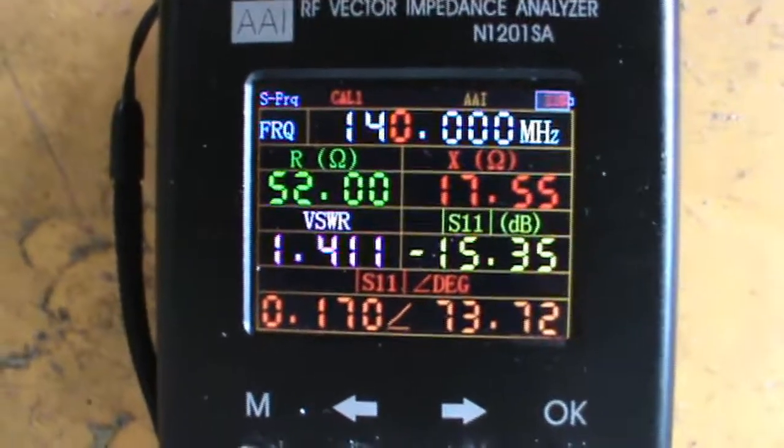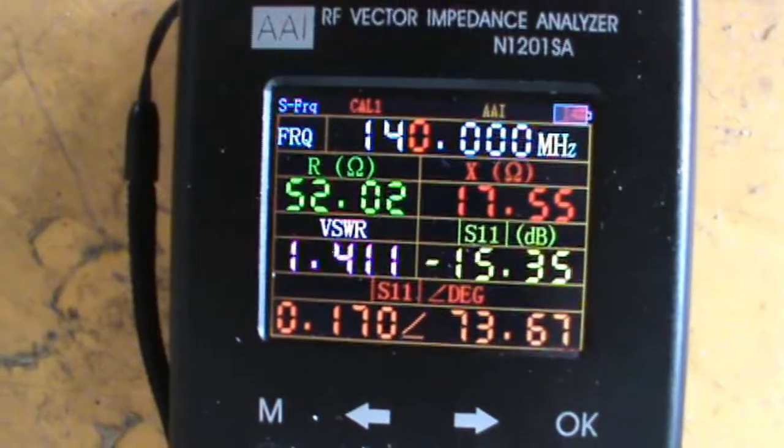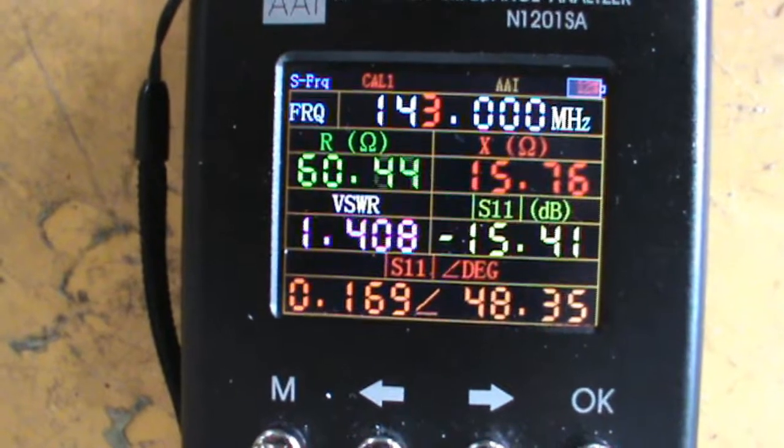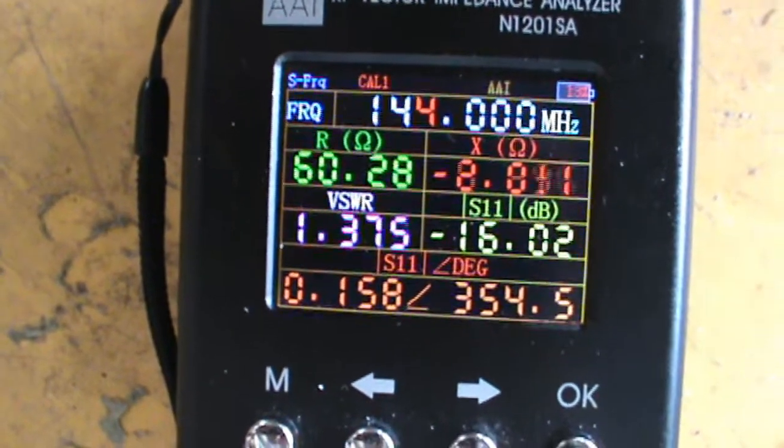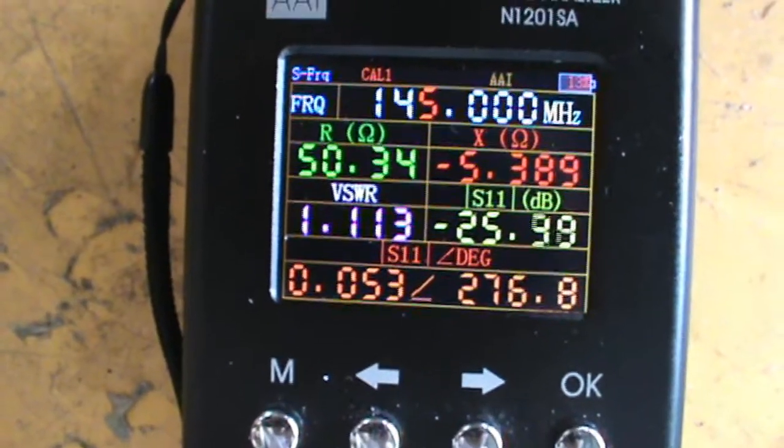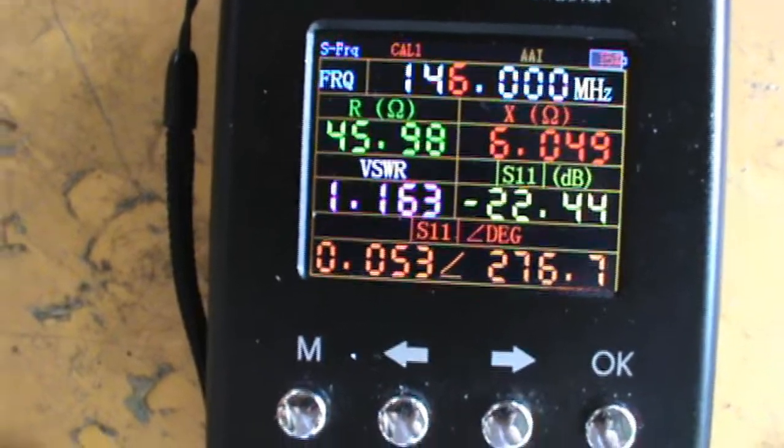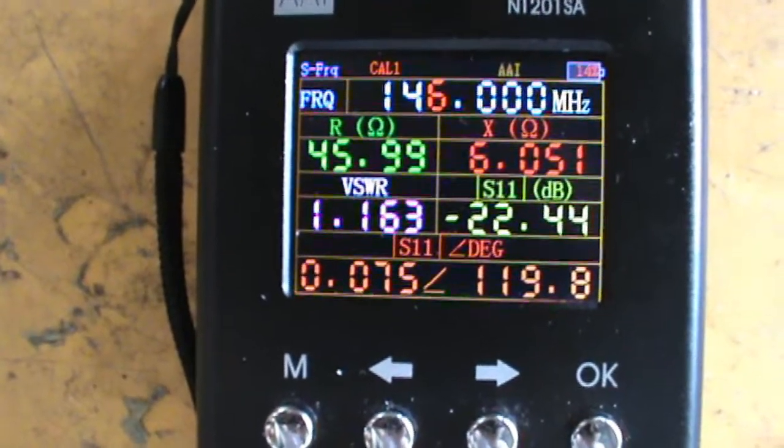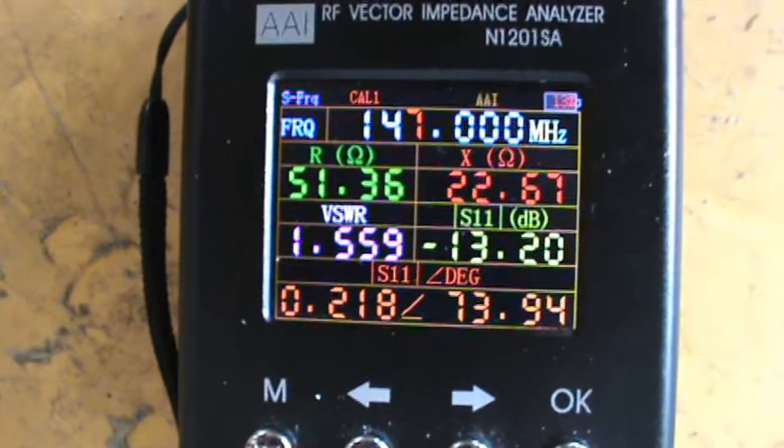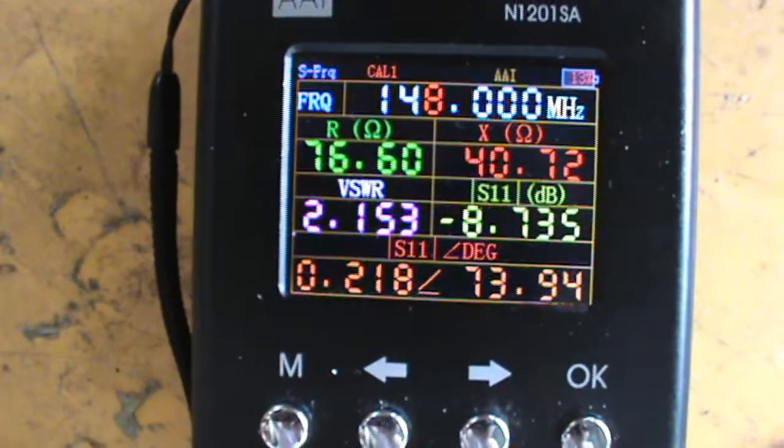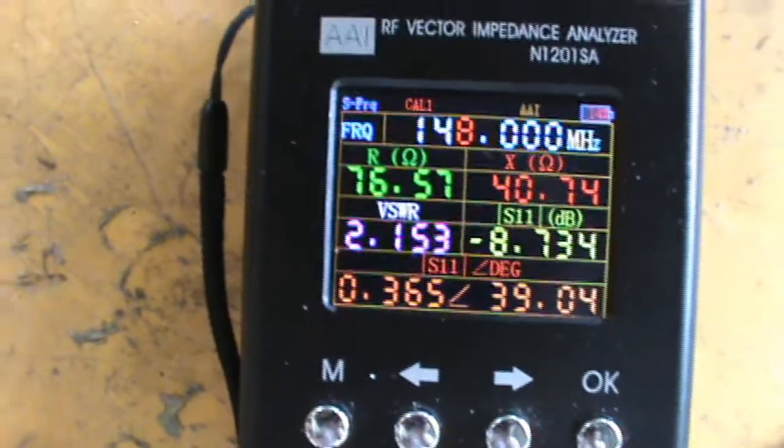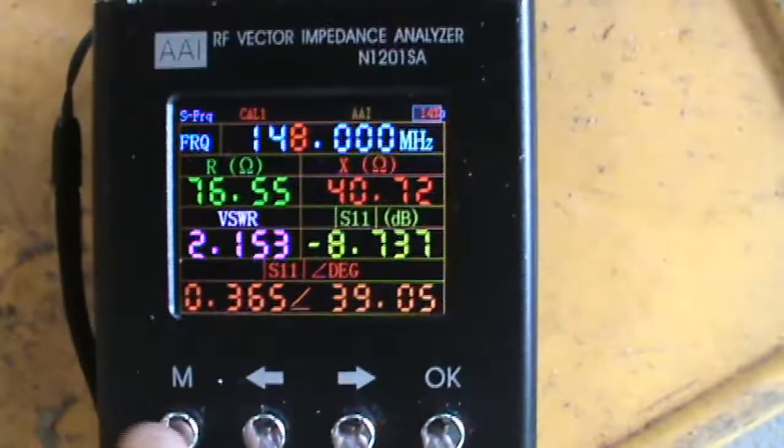Let's check the band edge on upper frequency. From 145 at 1.1, 146 is 1.1 or 1.2, 147 is 1.5, 148 is 2.1.